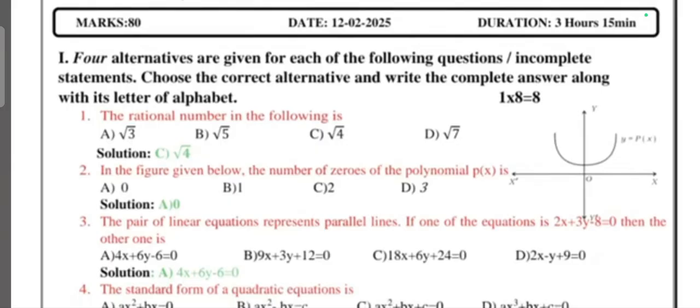First main section has eight multiple choice questions, each carries one mark. Question 1: The rational number in the following is answer 4. Question 2: In the given figure below, the number of zeros of the polynomial p(x) is answer zero. Question 3: The pair of linear equations represent parallel lines. If one of the equations is 2x + 3y - 8 = 0, then the other one is answer A.